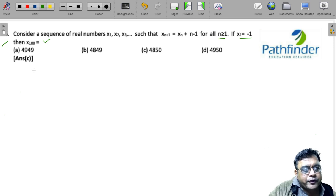Let us start putting values of n. When n = 1, on the left hand side we will get x2, so n = 1, 1 + 1 is 2, equals x1 + 1 - 1. This is what we get as the value of x2.